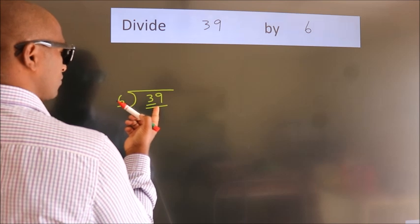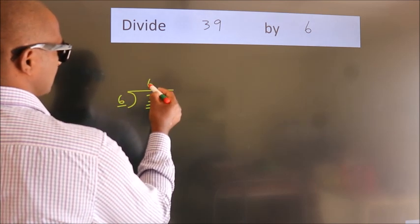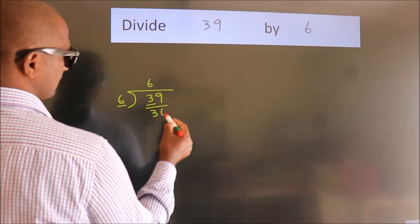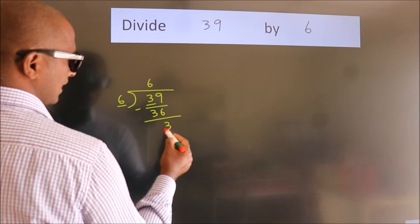A number close to 39 in the 6 table is 6 times 6, which is 36. Now we should subtract. We get 3.